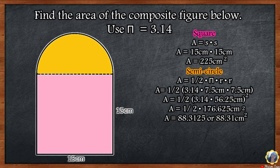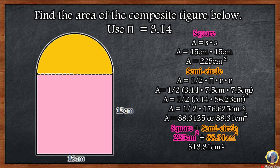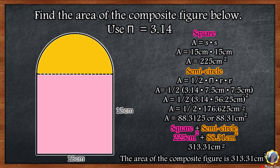Step 3: Add the area of the square and the area of the semicircle to find the area of the given figure. 225 square centimeters plus 88.31 square centimeters is equal to 313.31 square centimeters. The area of the composite figure is 313.31 square centimeters.